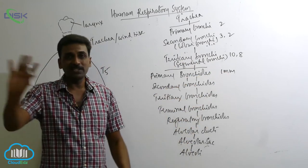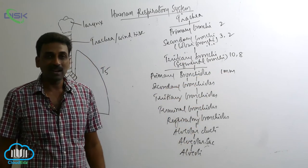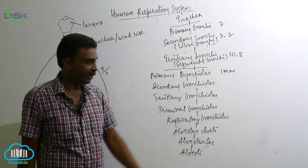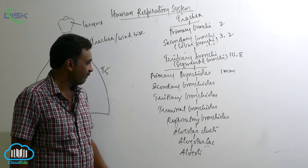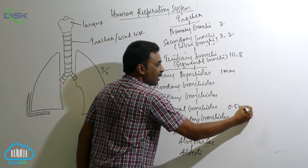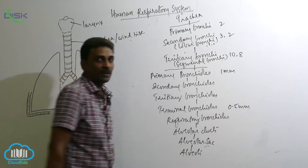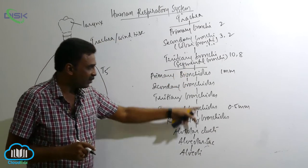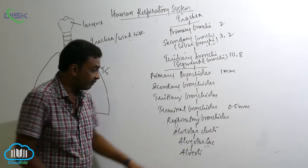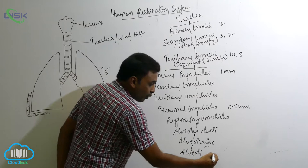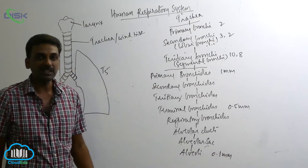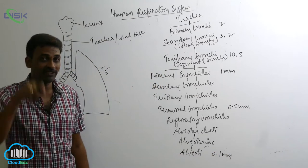C-shaped rings are absent in most bronchioles as they are very minute in diameter. When you come to terminal bronchioles, the diameter is half a millimeter. The diameter gradually reduces, and by the time we come to alveoli it is 0.1 millimeter — one tenth of a millimeter.